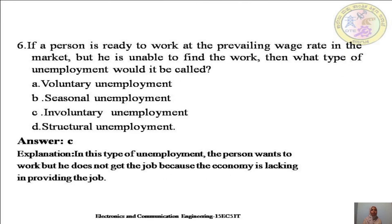The next question: If a person is ready to work at the existing wage rate in the market but is not able to find work, what type of unemployment would it be called? Options are A. voluntary unemployment, B. seasonal unemployment, C. involuntary unemployment, or D. structural unemployment. The correct answer is C — involuntary unemployment. Here the person is willing to work at the existing wage rate but is unable to find a job, because the economy is lacking in providing jobs.